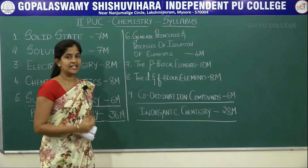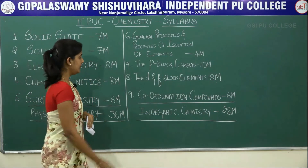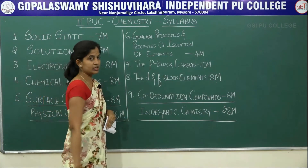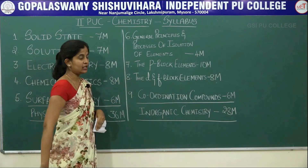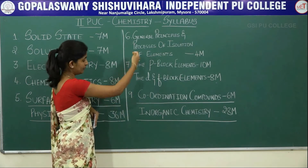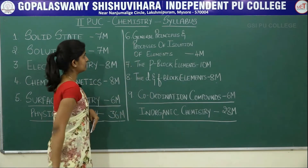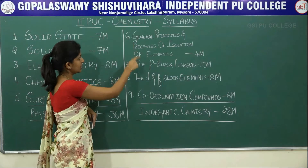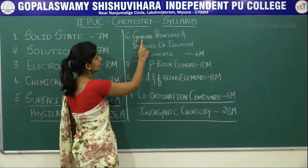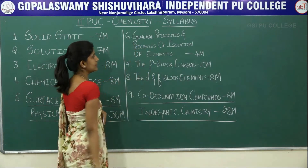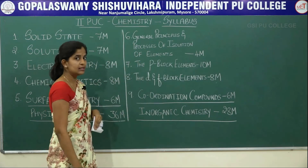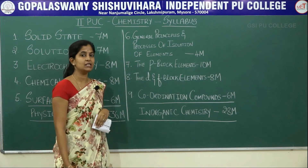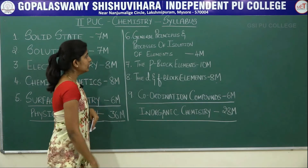The next branch is inorganic chemistry, which has 4 chapters. The first chapter — the 6th chapter overall — is general principles and processes of isolation of elements, simply called metallurgy.